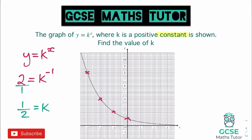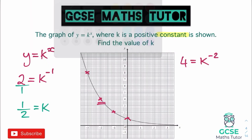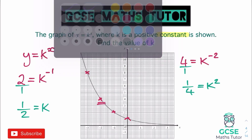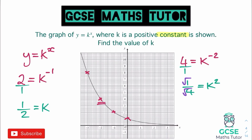Checking using the coordinate (negative 2, 4): we'd have 4 = k to the power of negative 2. We know 4 is 4 over 1, and the reciprocal gives one quarter equals k squared. Square rooting both sides gives k = one half — same answer. This highlights the technique: pull a coordinate off the graph and substitute it into the equation. Now let's look at an even trickier question.